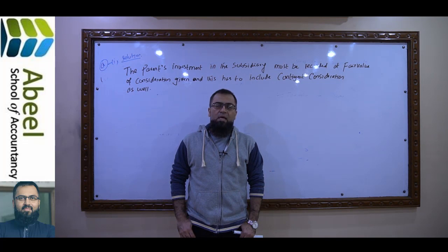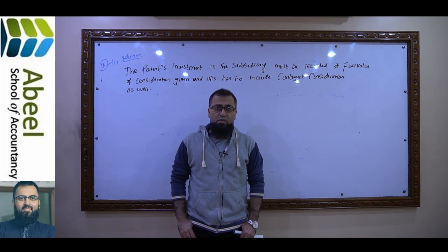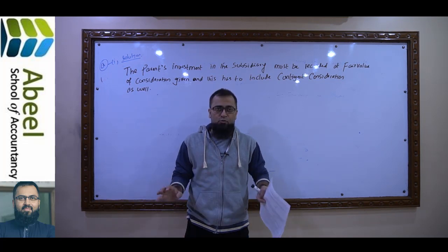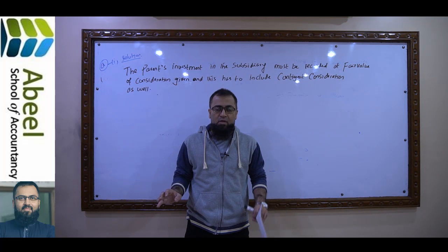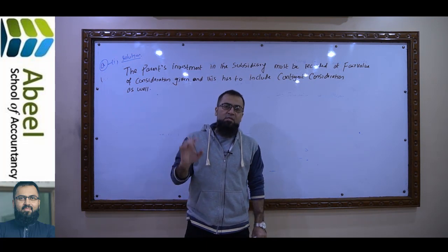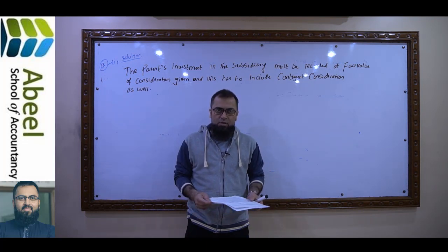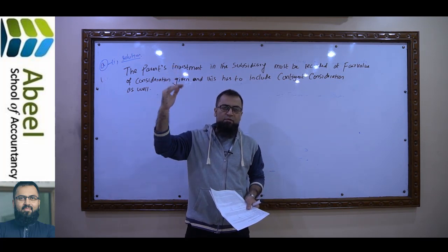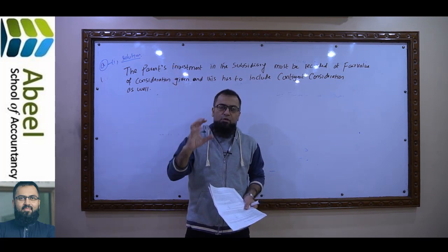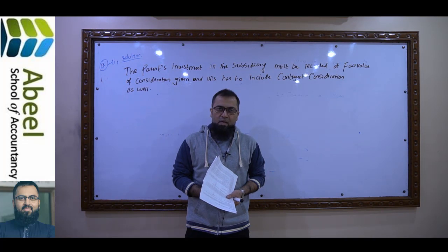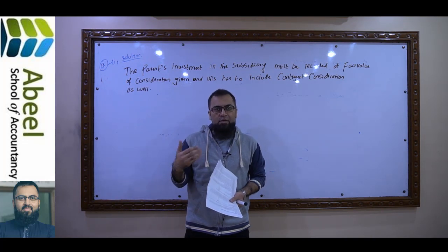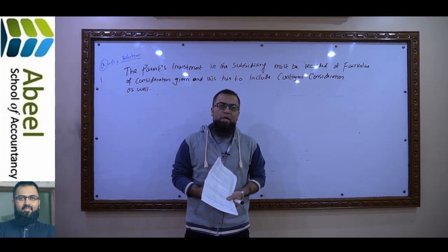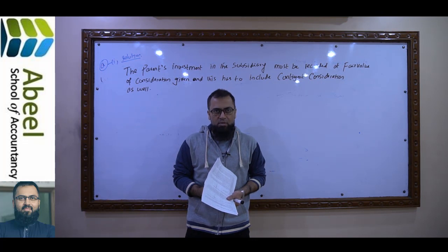Repeating the same point again: if it were an IAS 37 scenario, we would not book a contingent liability. Since IAS 37 does not apply here, its rules will not be applicable. As soon as I record the contingent consideration, my cost of investment will increase, and obviously my goodwill will also increase. The net impact in group accounts will be: an increase in goodwill will be visible, and one liability will be recorded.